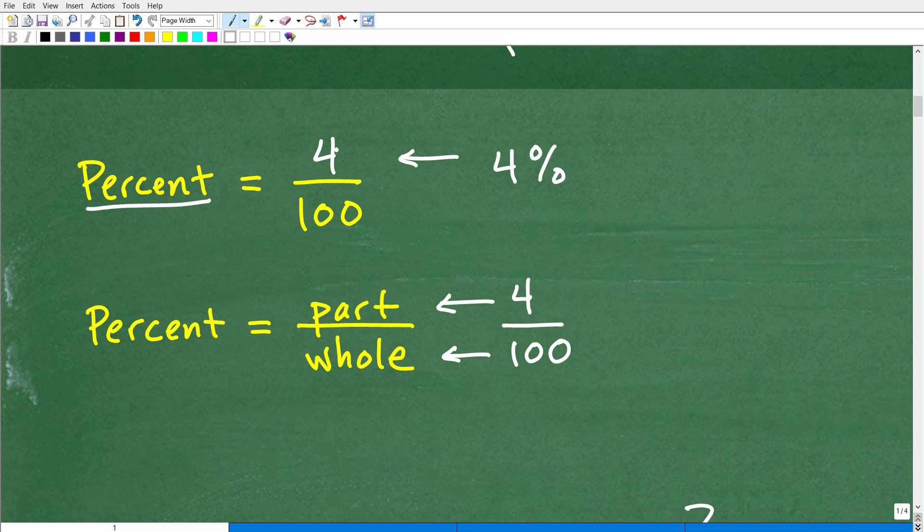Speaking non-technically, percent is basically a fraction where the denominator is 100. When we're comparing a number to 100, constructing a fraction where the denominator is 100, this top number is percent. If I write the fraction 4 over 100, this number I can express as 4%.